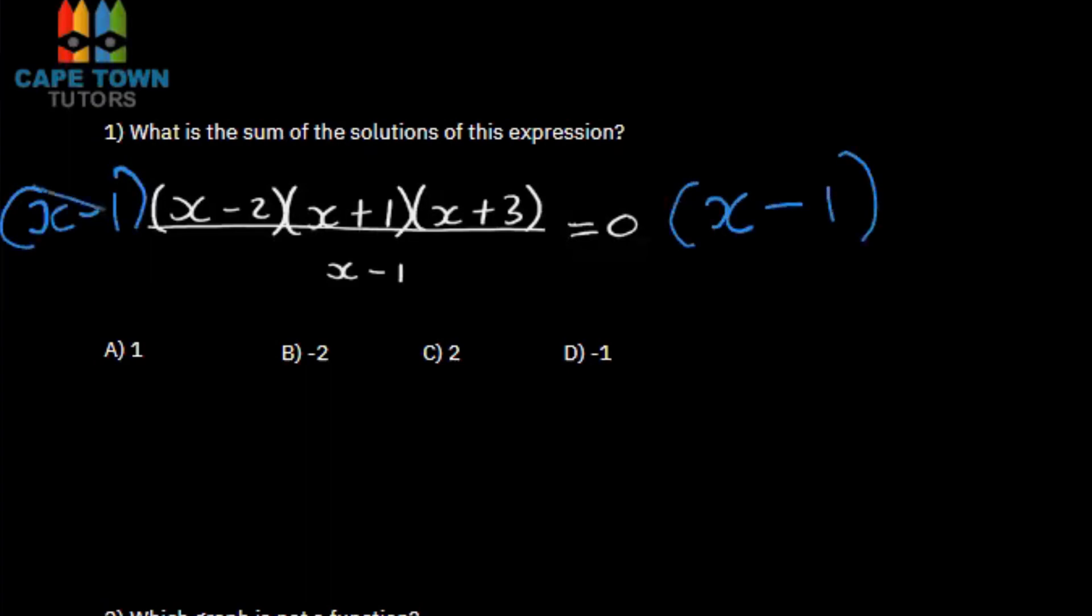If I do this, the x minus 1 is going to cancel this x minus 1, and 0 is going to be multiplied by x minus 1, which we know is going to be the same thing.